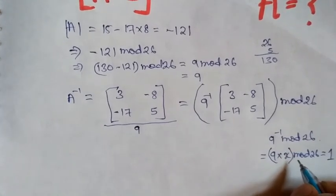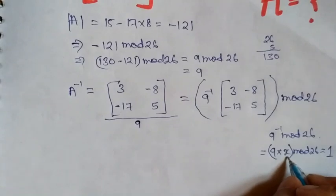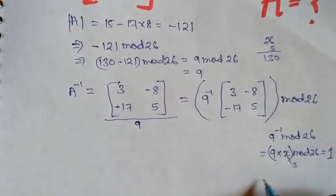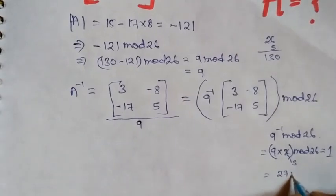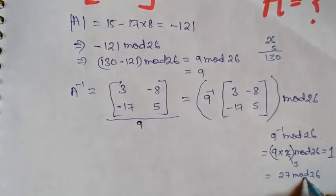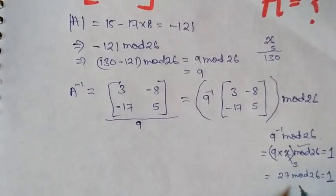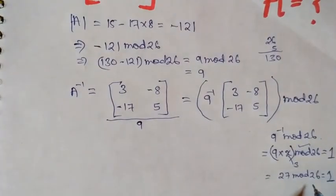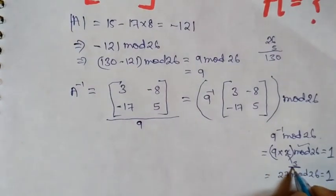Let's say if x equals to 3, 9 into 3 is 27 mod 26, so 27 mod 26 is 1. This equation satisfies, so our mod value will be 3.